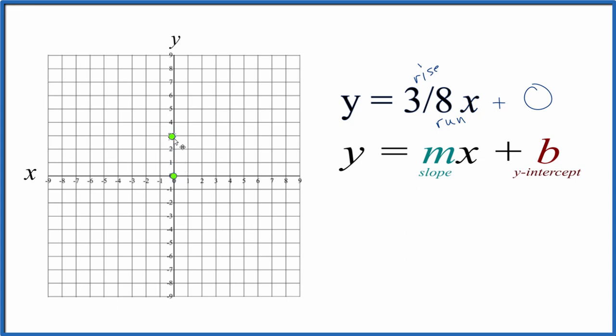go up one, two, three, and then run one, two, three, four, five, six, seven, eight. And we have our two points.